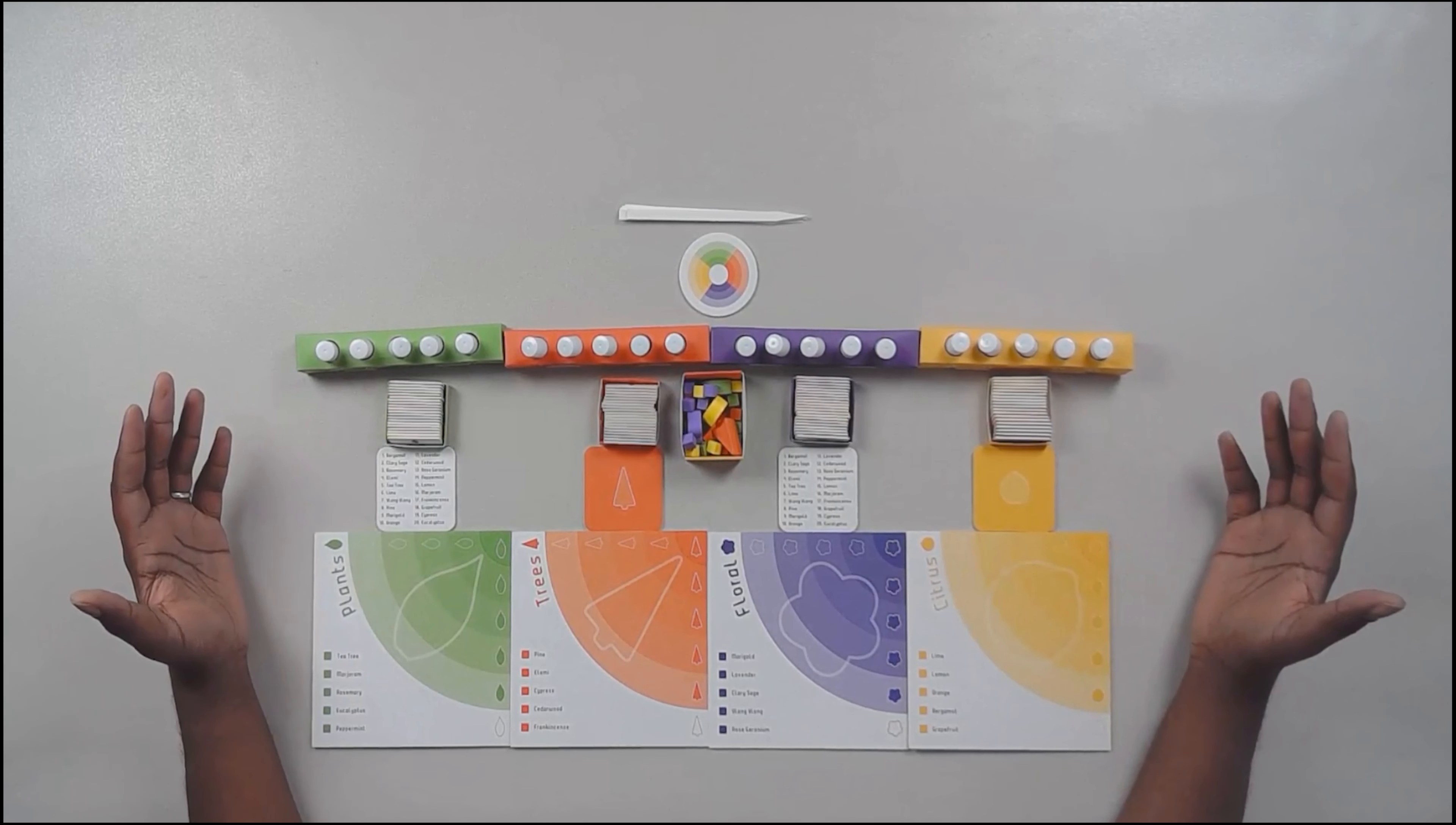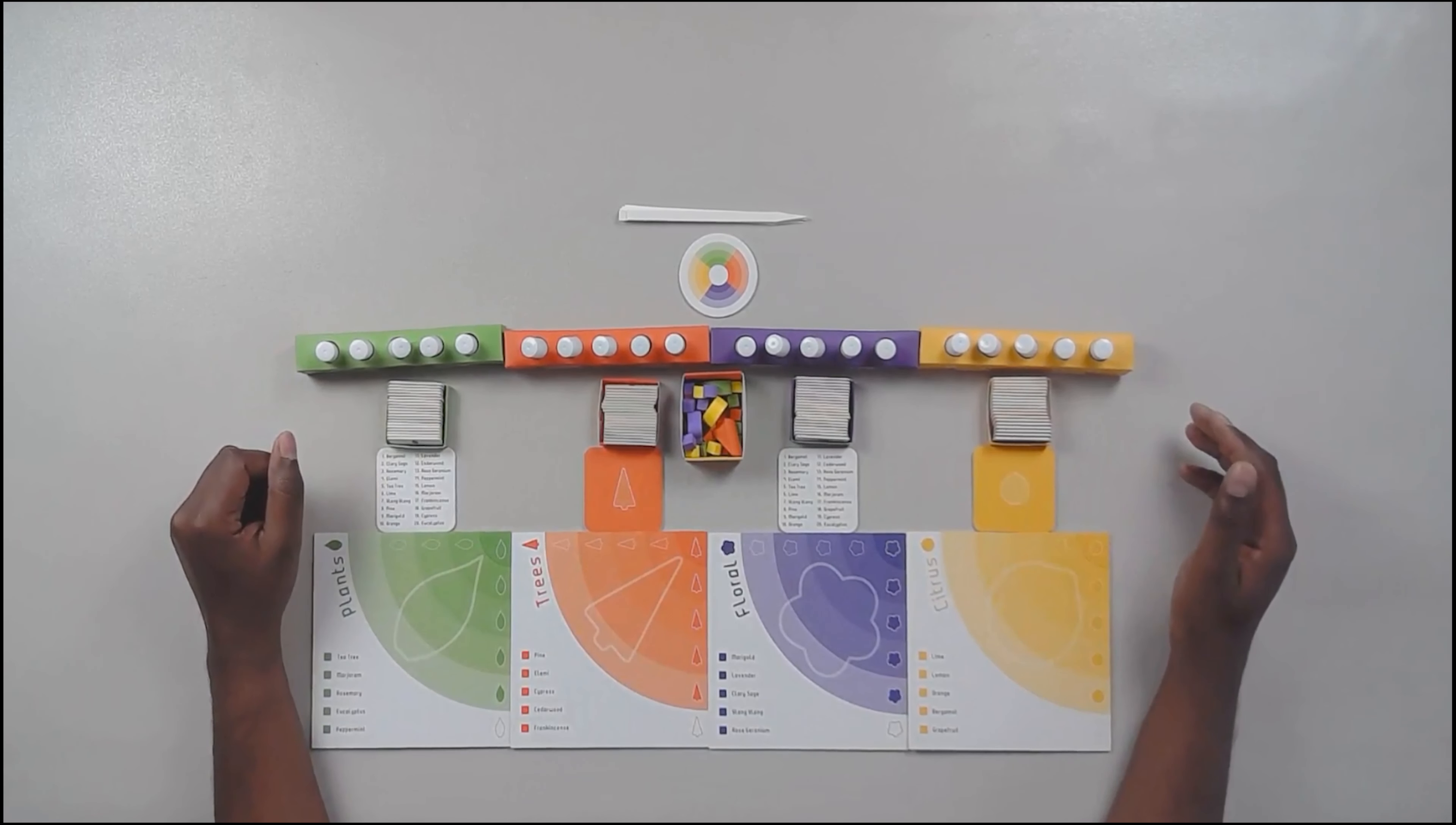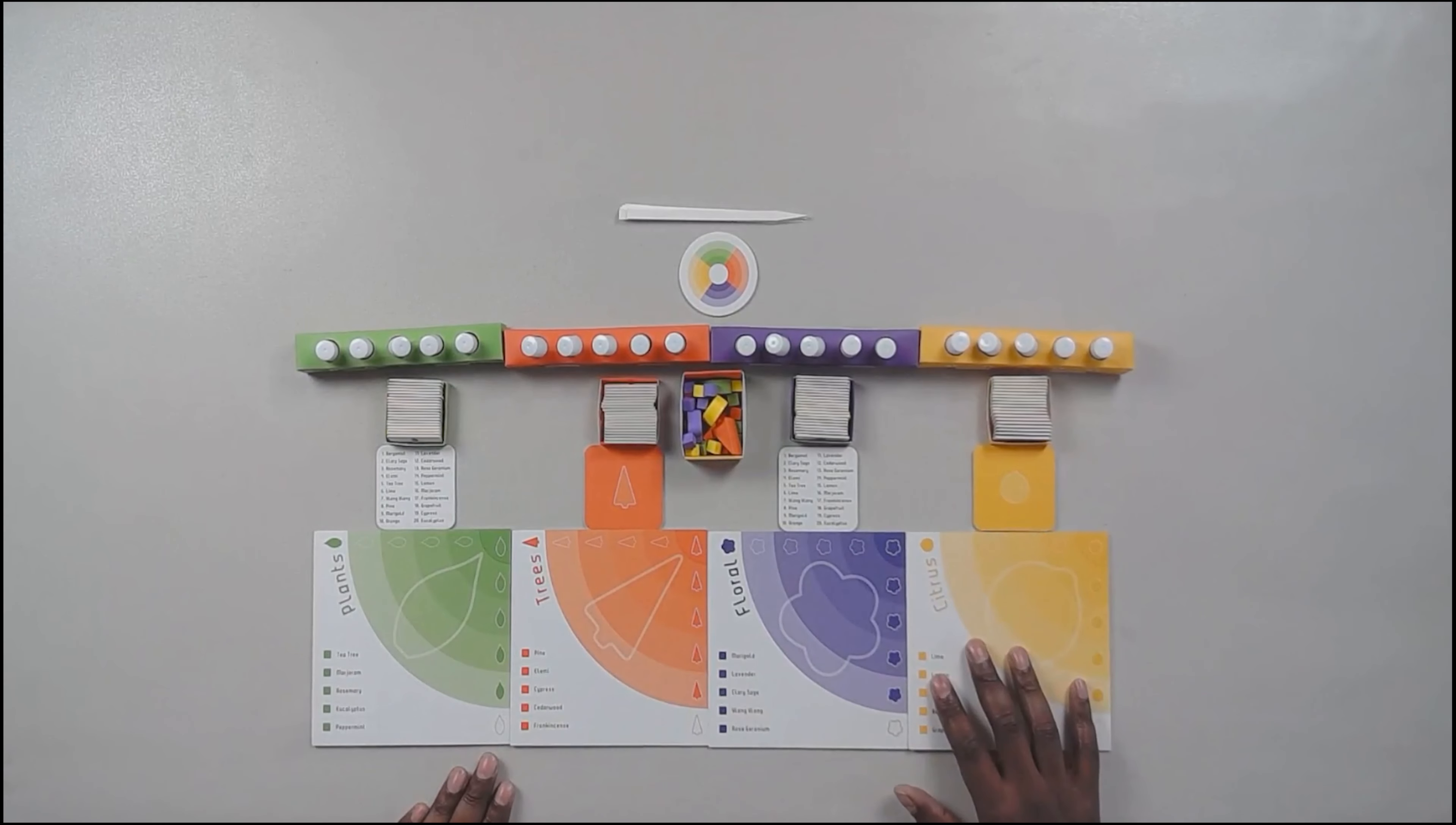So in the box, you're going to have your 20 different scents in certain categories. So the scents are grouped by plants, trees, floral, and citrus.